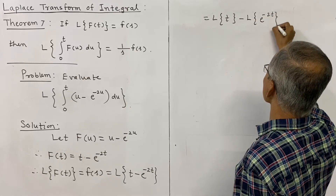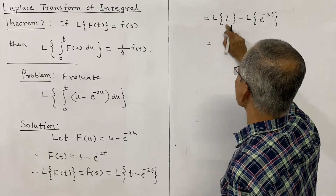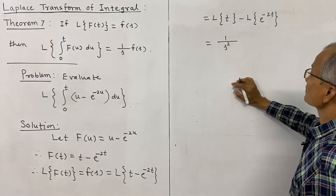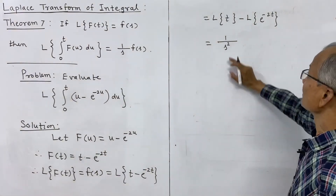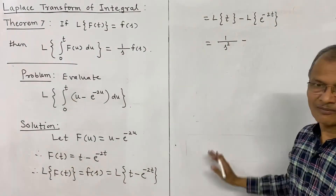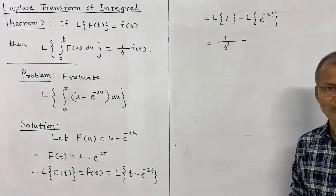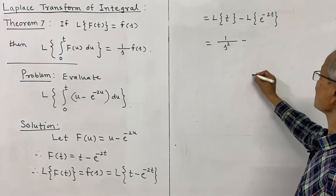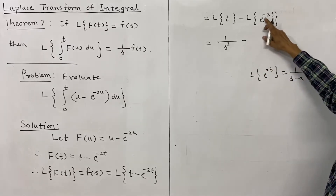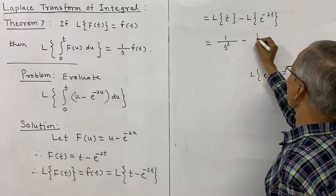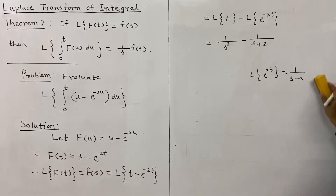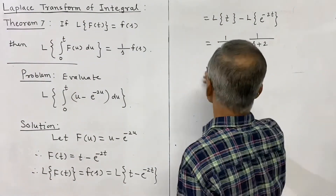Using the formula L{tⁿ} = n!/s^{n+1}, for t¹ we get 1!/s² = 1/s². For L{e^{-2t}}, using the formula L{e^{at}} = 1/(s - a) with a = -2, we get 1/(s - (-2)) = 1/(s + 2). Therefore f(s) = 1/s² - 1/(s + 2).